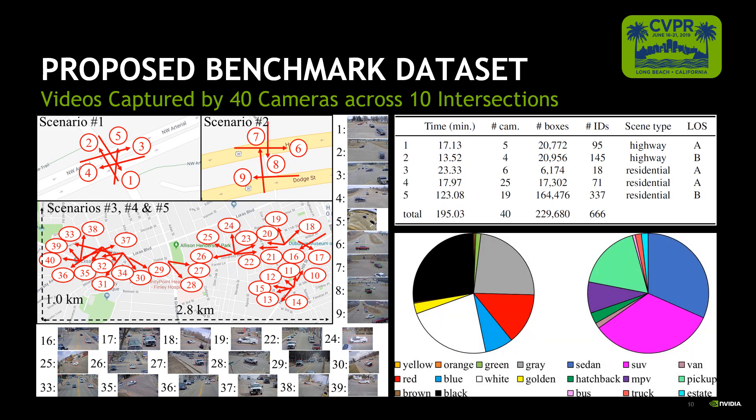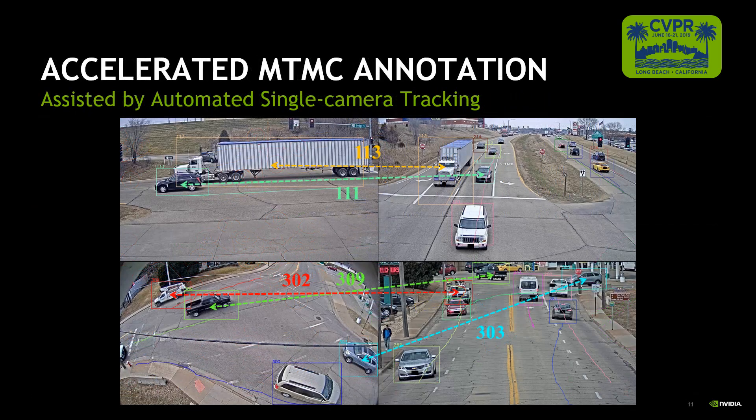The diversity of vehicle color and type in CityFlow is also noteworthy. For the annotation of MTMC tracking, we first run a baseline tracking-by-detection approach on the videos, and then manually correct errors like false positives, false negatives, and identity switches. The same identities across multiple cameras are also grouped manually.